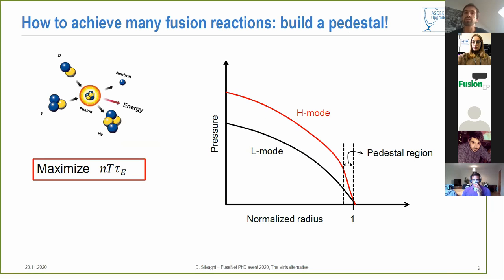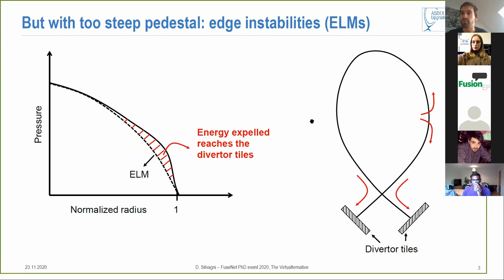Our goal is to achieve as many fusion reactions as possible and to do that we need to maximize the pressure and the energy confinement time. One way to do it is to build a pedestal in our edge region which means to have steep gradients, and in this way one can reach high core pressures. This is what is called usually H-mode confinement regime.